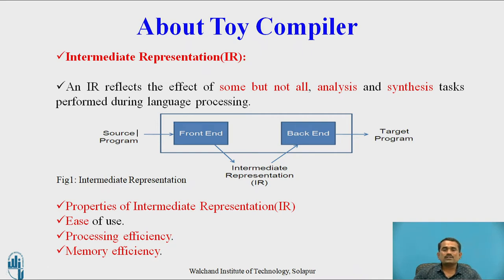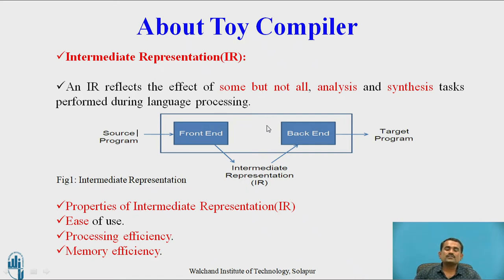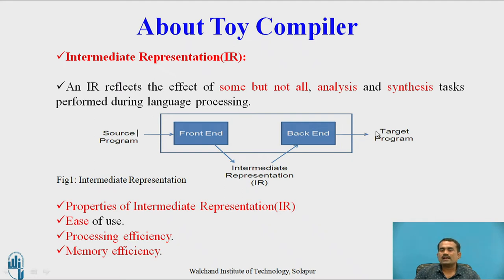Here, in the given problem statement, we analyze and then get the code. Whatever code we get as IR, that is given as input to the source program or target program. We are not getting all the code from the input — that is why we use the term 'some, but not all.' Some part of the source code we will get in the output. This is the block diagram: the source program is given as input to the front end. After performing lexical, syntax, and semantic rules, we get the intermediate representation, which is then given as input to the back end. The back end produces the target program.